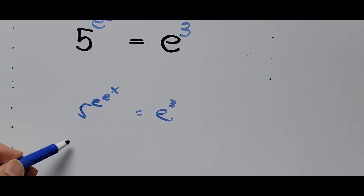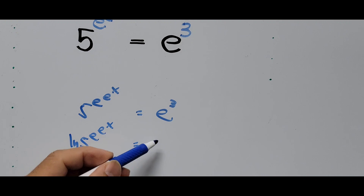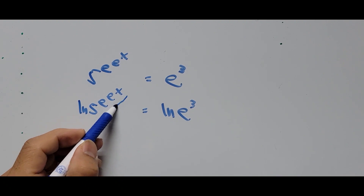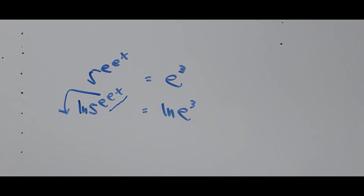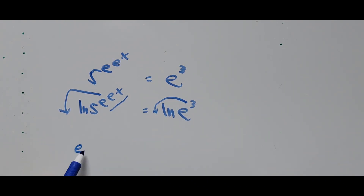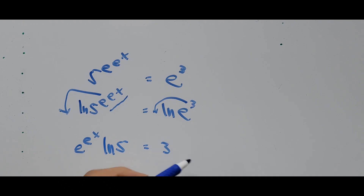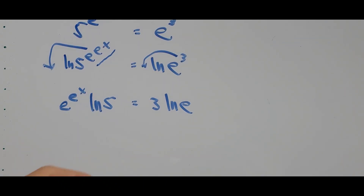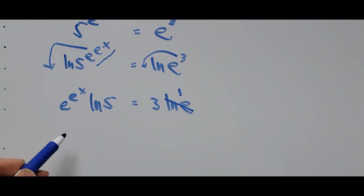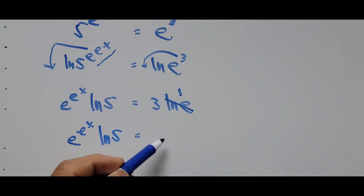We take the natural logarithm of both sides of the equation: ln of 5 to the power of e to the power of e to the power of x equals ln of e cubed. We bring down the exponent as a coefficient, giving us e raised to e raised to x, times ln of 5, equals 3 ln of e. Since ln of e equals 1, the equation becomes e to the power of e to the power of x times ln of 5 equals 3.